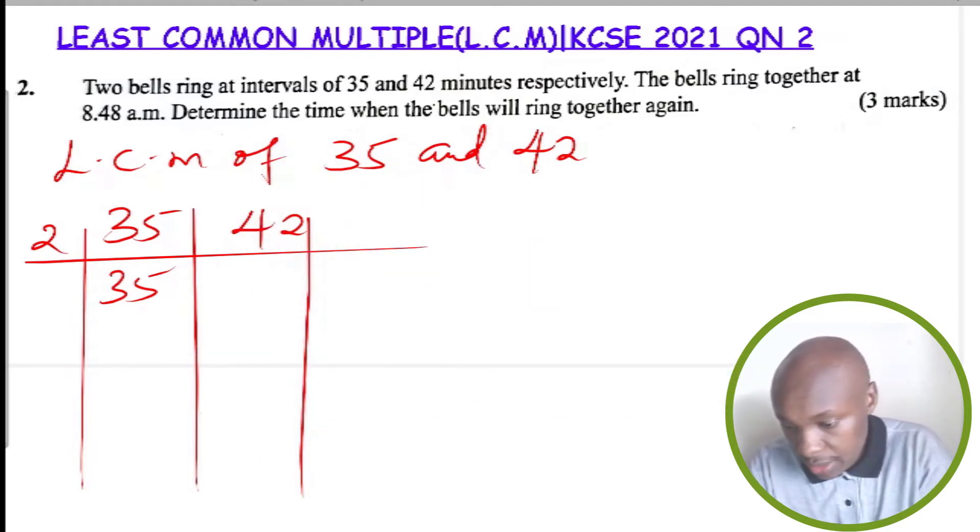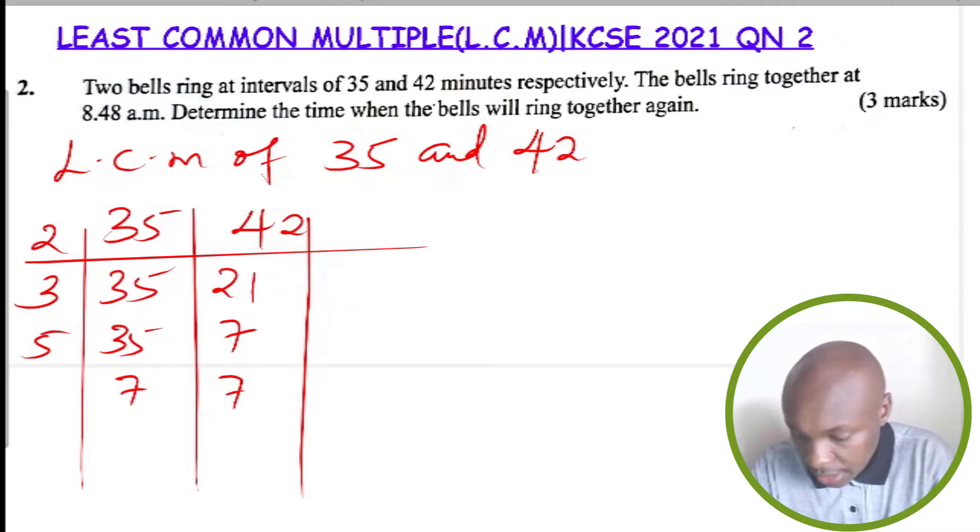Then divide by three. It will be 35, this will be seven. Divide everything by five, you get seven, you get seven. In cases where you find like seven can't be divided by five completely, just leave it as seven. Then seven divided by seven, this is one, one.